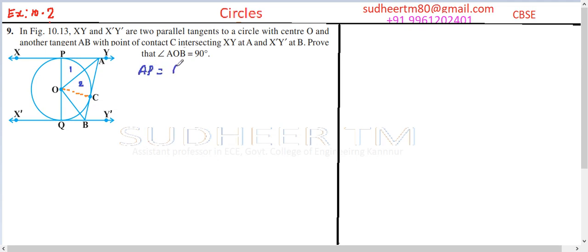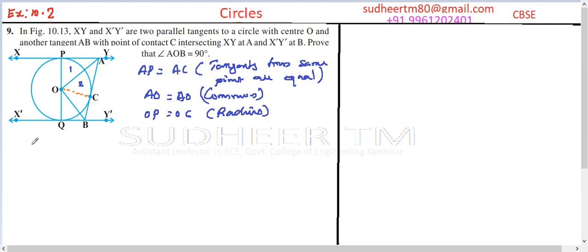In this, AP and AC are tangents from the same point, so AP is equal to AC. The reason is tangents from the same point are equal. Also, AO is equal to AO, which is common to both triangles. And OP is equal to OC, as both are radii.